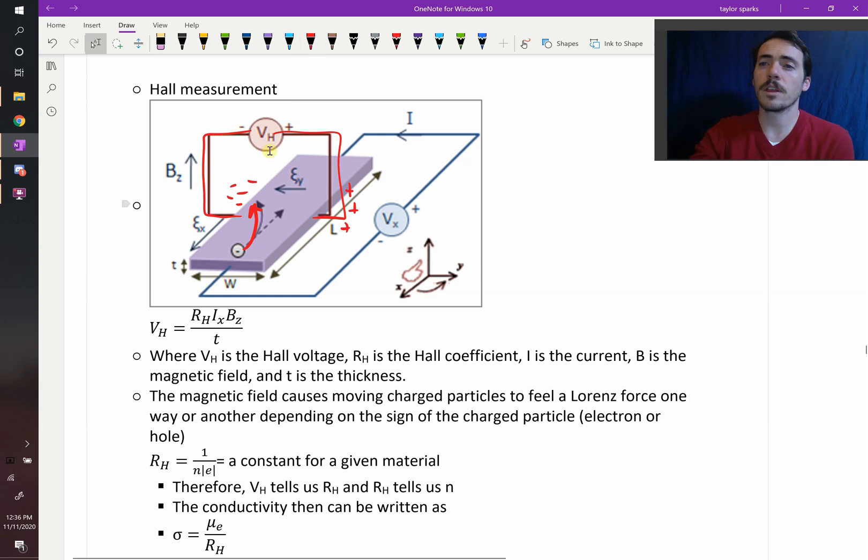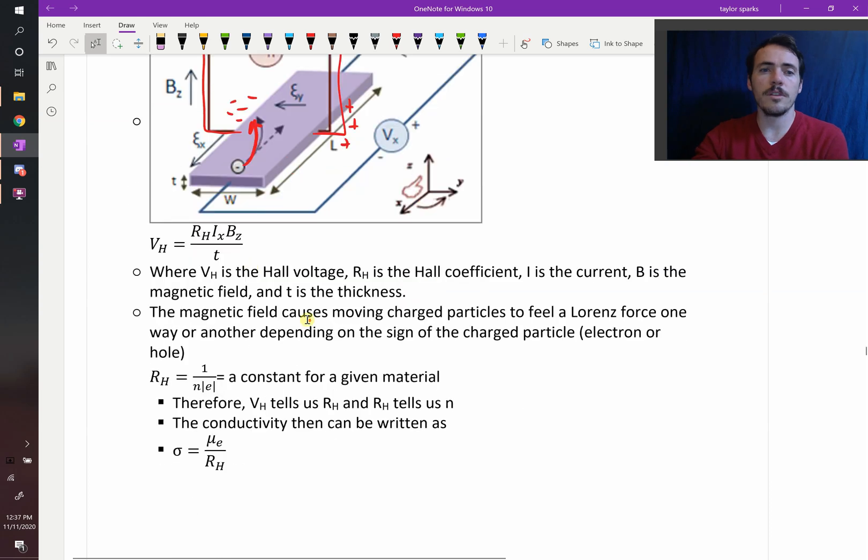We call that voltage the Hall voltage. And the Hall voltage, we know how to calculate it. It's equal to the Hall coefficient, RH, multiplied by our current times the magnetic field, and divided by the thickness, T, of your sample. If you know all those things, then you'd be able to calculate your Hall voltage.